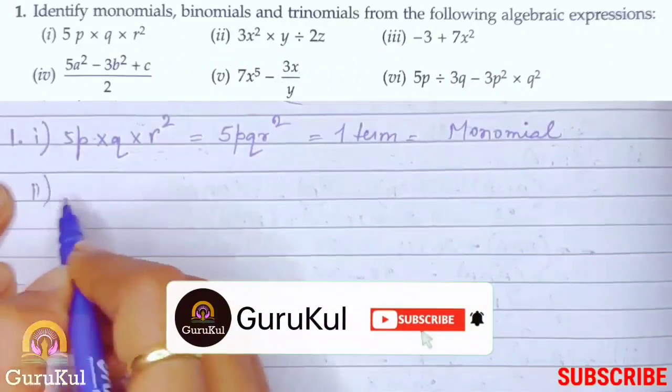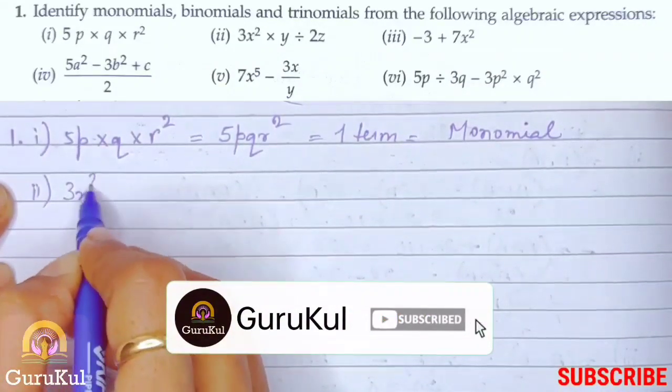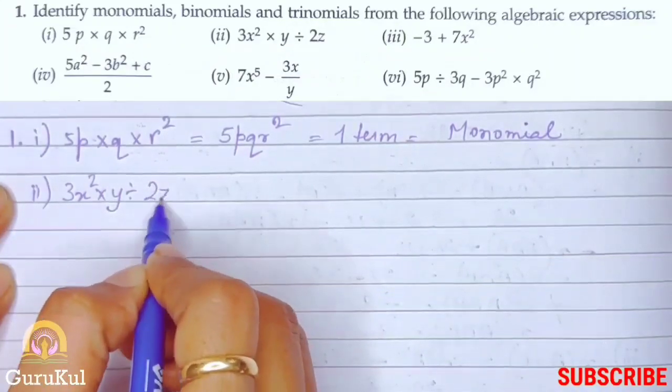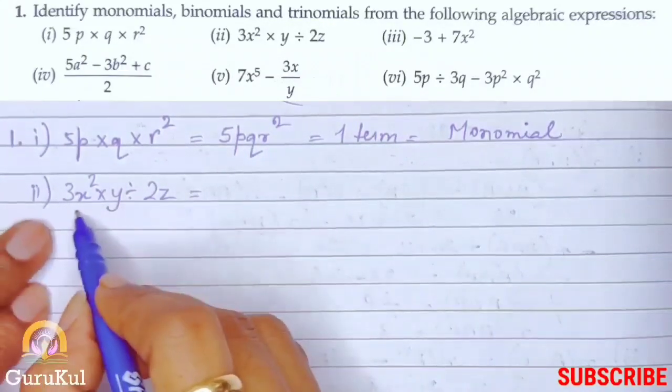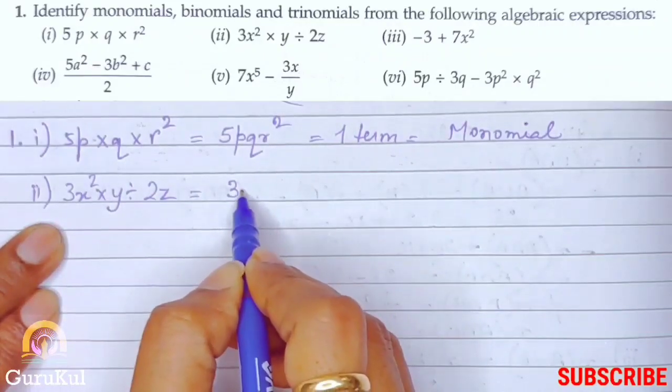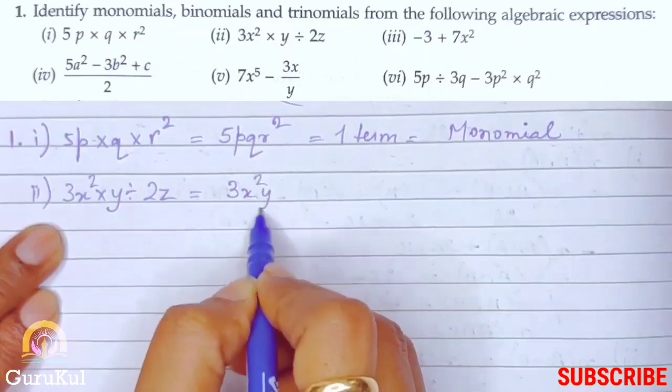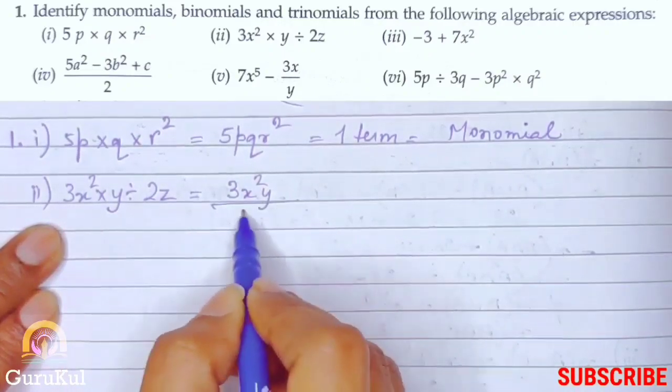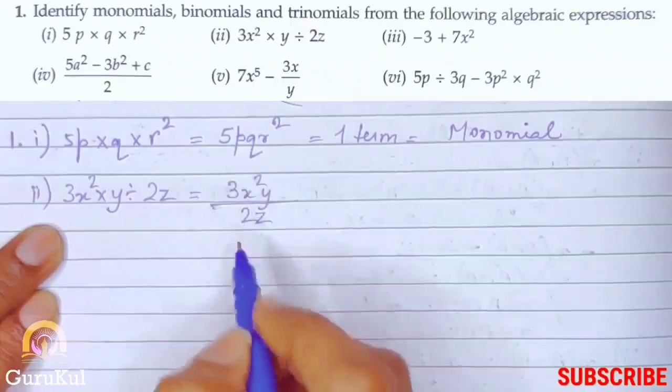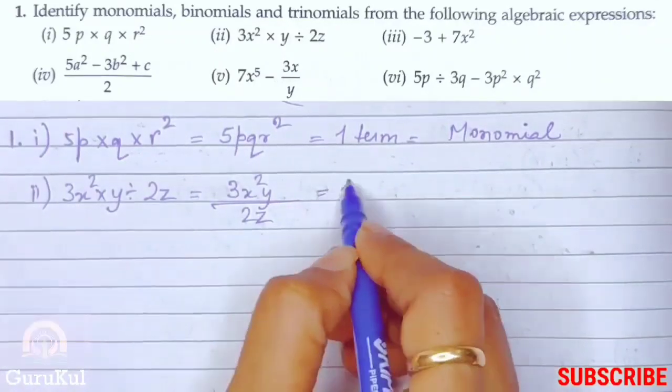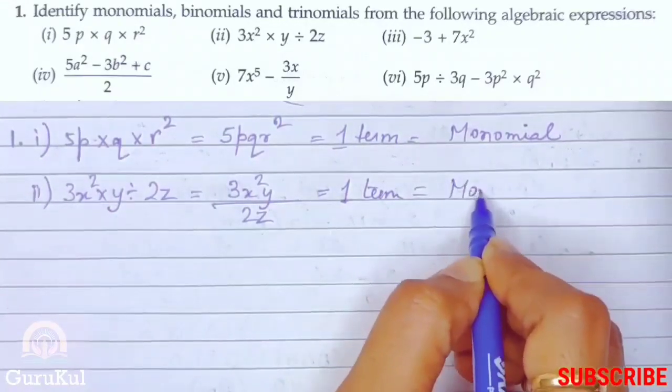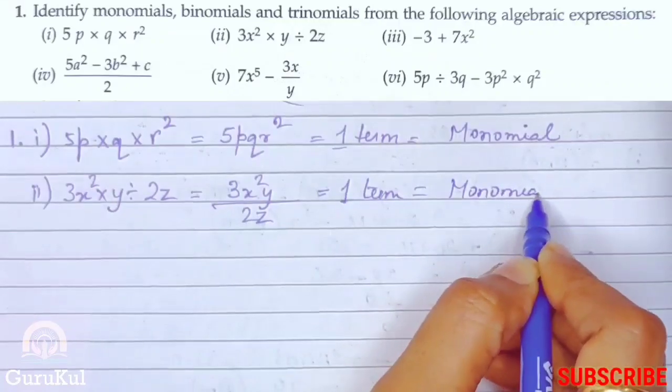Second one, 3x square into y divided by 2z. Now see, 3x square into y, we can also write like 3x square y divided by 2z. So this is also one term. One term is equal to monomial.